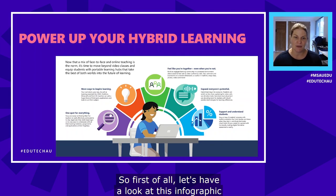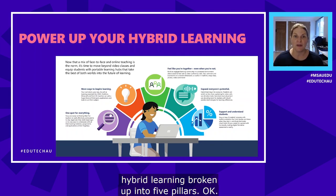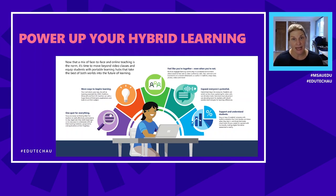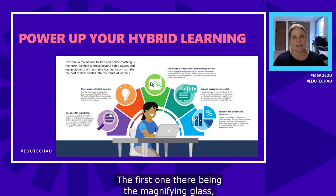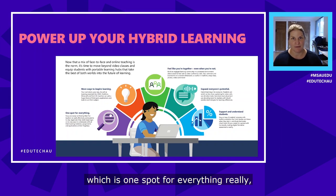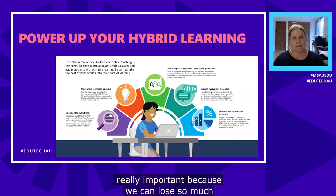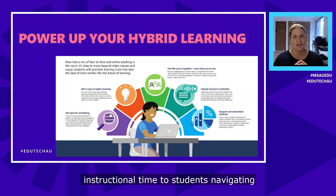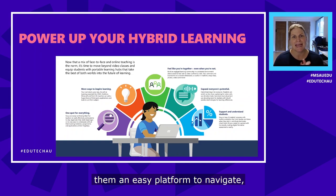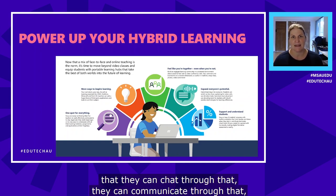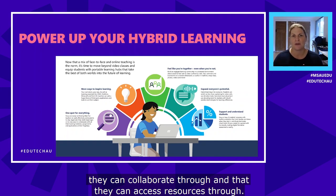Let's have a look at this infographic — hybrid learning broken up into five pillars. The first one, represented by the magnifying glass, is one spot for everything. This is really important because we can lose so much instructional time to students navigating and finding resources. We want to give them an easy platform to navigate — one they can chat through, communicate through, collaborate through, and access resources through.